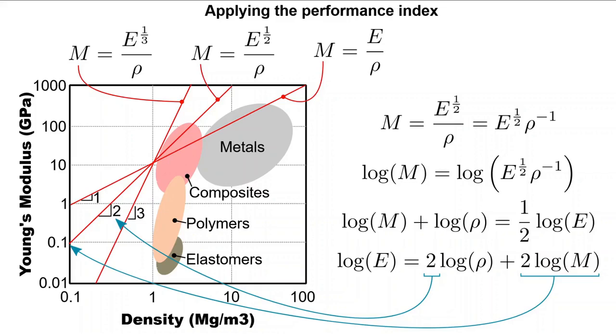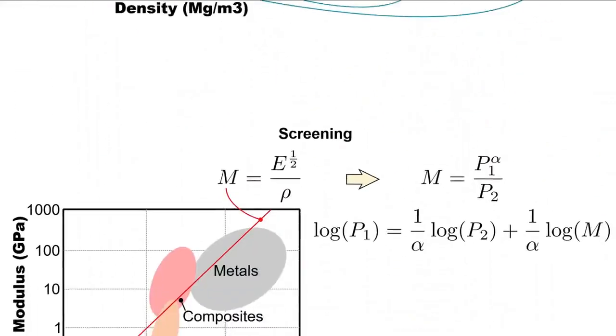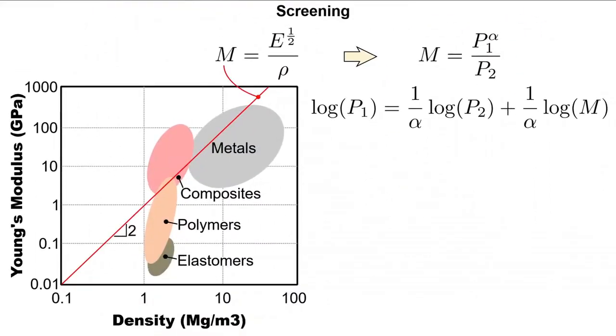We are now in a position to start screening. If you know what the performance index is, then you can jump to the general form of this type of construction and set up for screening. Plotting the performance index alone in this manner does not uniquely identify any singular group of materials.